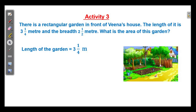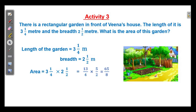Third activity: there is a rectangular garden in front of Vina's house. The length of it is 3 and 1 by 4 meter and the breadth is 2 and 1 by 2 meter. What is the area of this garden? Length is equal to 3 1 by 4 meter, breadth is equal to 2 1 by 2 meter. Area is equal to length into breadth. Making them improper fractions: 13 by 4 into 5 by 2. There are no common factors, so multiply the numerators and denominators: 65 by 8, which is the same as 8 1 by 8 square meter.